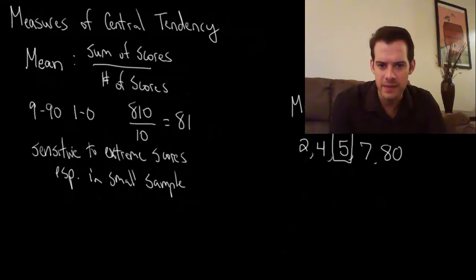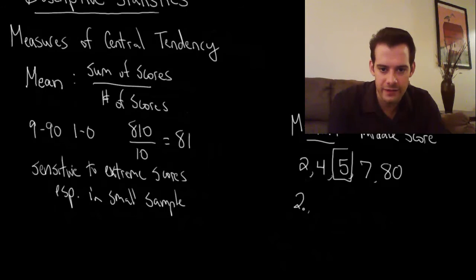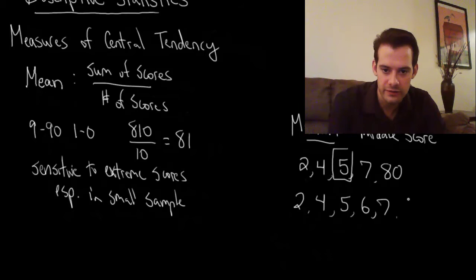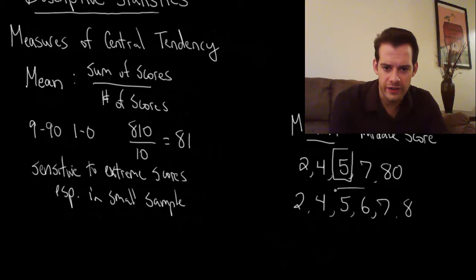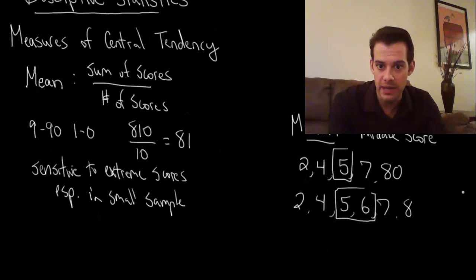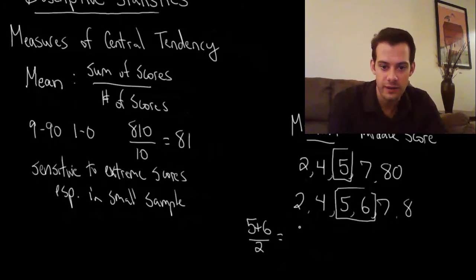You might wonder: how do I find the median if I have an even number of scores, like two, four, five, and six? Both five and six are in the middle. All you do in that case is add the two middle scores — five plus six — and divide by two. You take the average of these two, and so in that case our median would be 5.5.